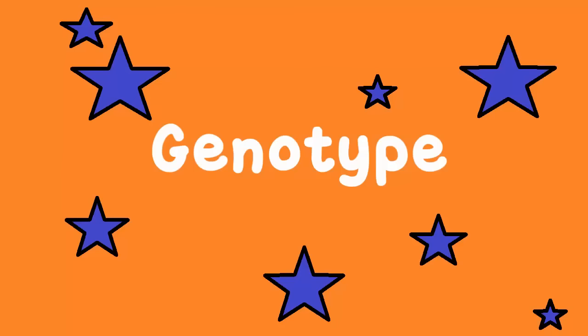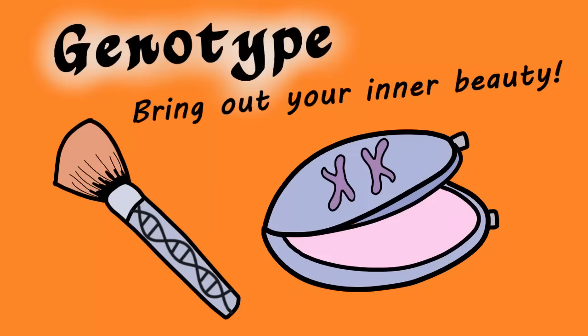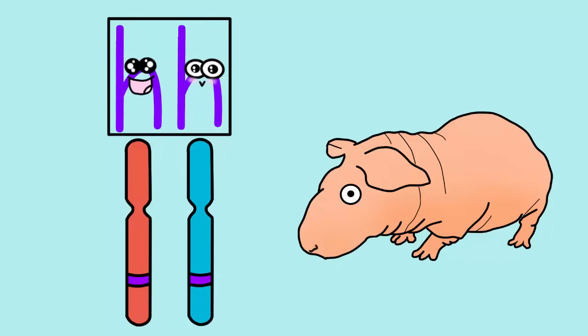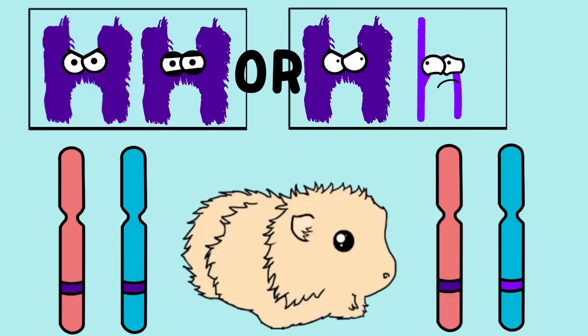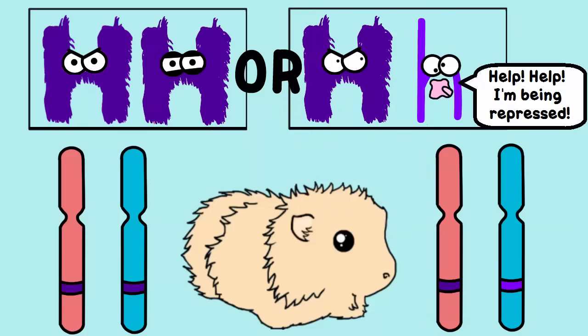A hairless guinea pig's genotype — that's the genetic makeup of an organism — can be represented as lowercase h, lowercase h. A guinea pig that does have hair can be represented as capital H, capital H, or capital H, lowercase h. It only takes one dominant allele — a capital H — for a trait to show up. Think of it as dominating: that dominating allele means the recessive allele is hidden.